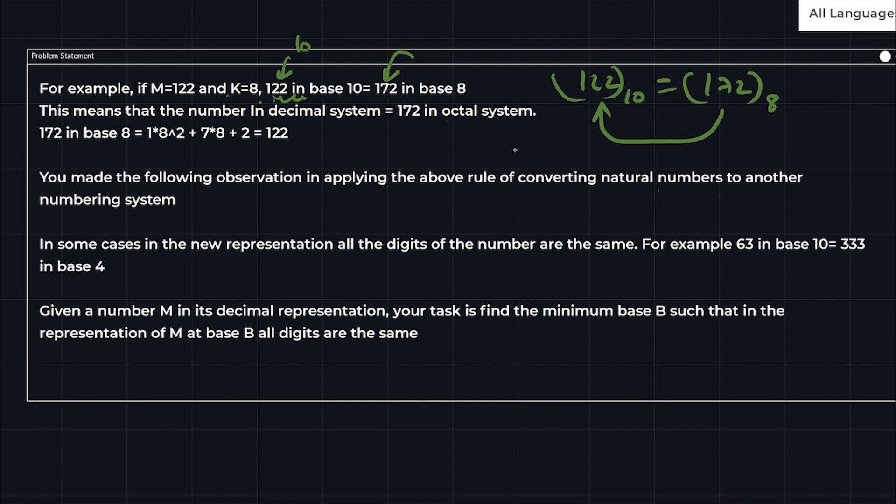What the question says is you made the following observation: in some cases in the new representation, all the digits of the number are the same. For example, 63 in base 10 is triple 3 in base 4. So 63 in base 10 equals 333 in base 4. Given a number M in its decimal representation, your task is to find the minimum base B such that in the representation of M at base B, all digits are the same.